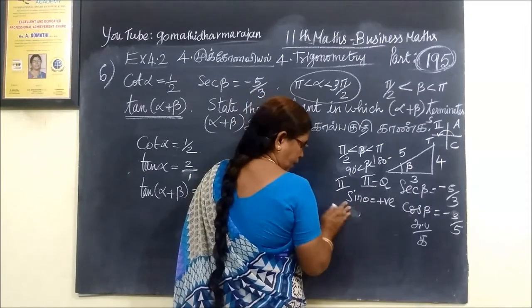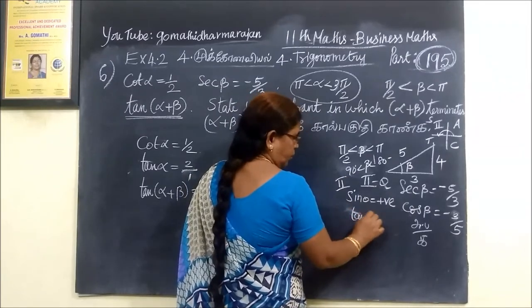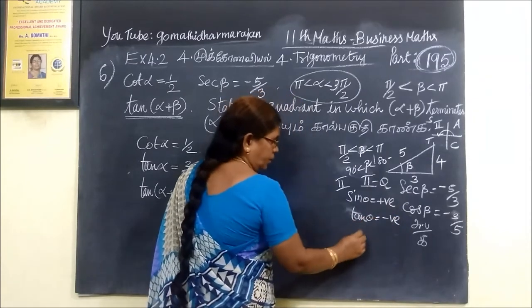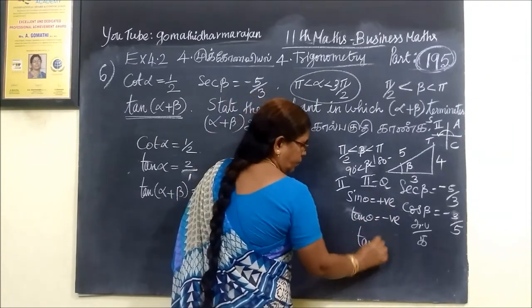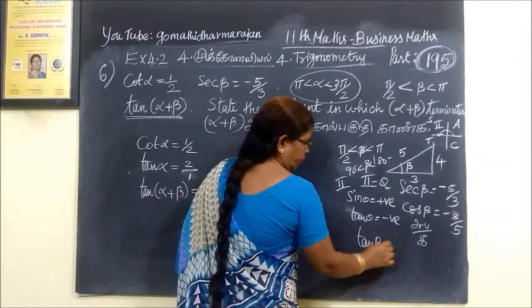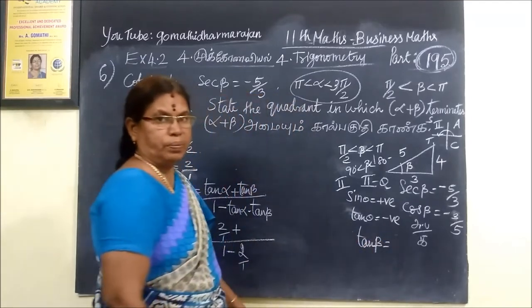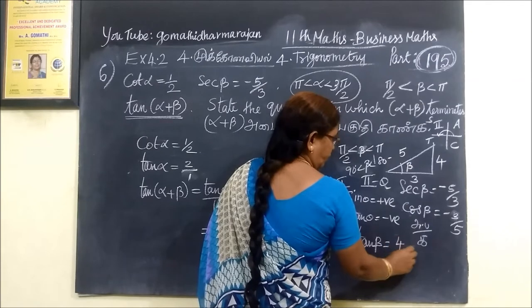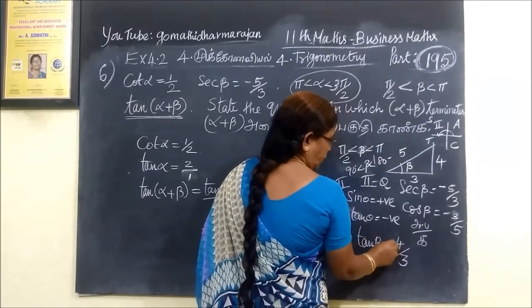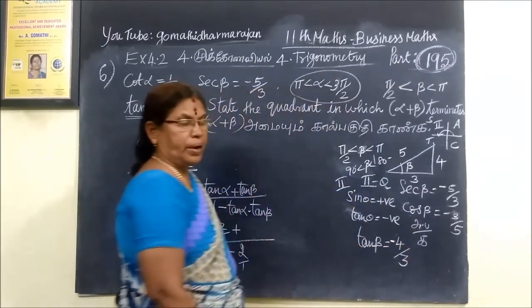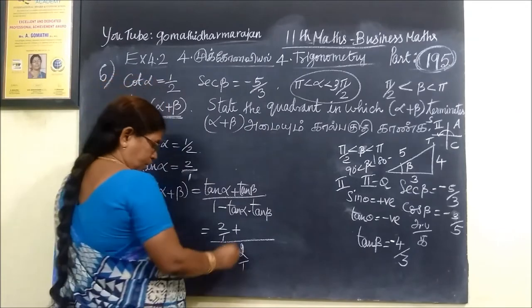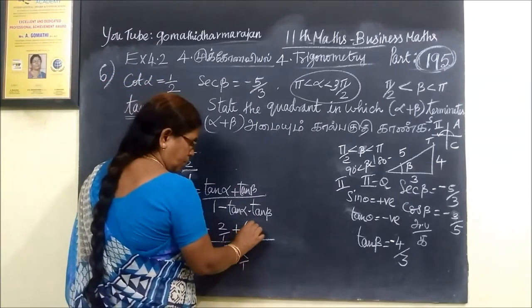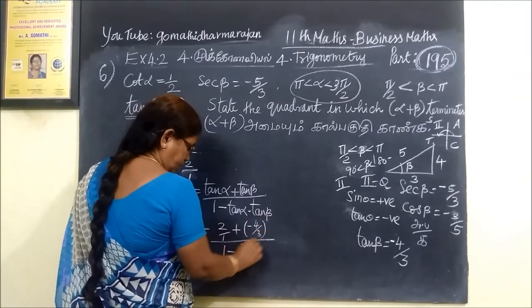Tan theta is negative in the second quadrant. Using the formula: tan equals opposite by adjacent side. Opposite side is 4, adjacent side is 3. Since tan is negative in the second quadrant, tan beta equals minus 4 by 3.